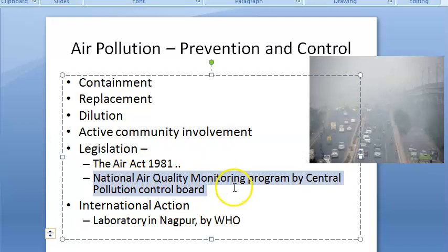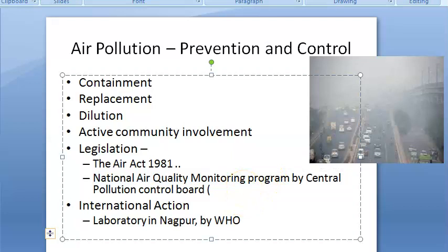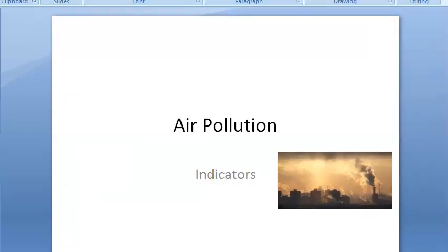This National Air Quality Monitoring Program has generated data since last 14 years from 10 major Indian cities. Monitoring of air pollution is very important to control air pollution. The best indicators of air pollution are sulfur dioxide, smoke, and suspended particles.